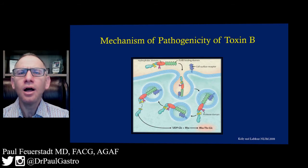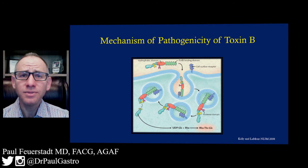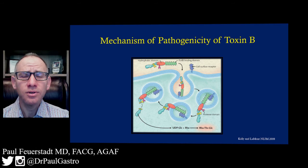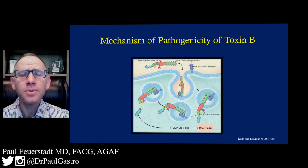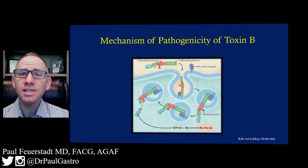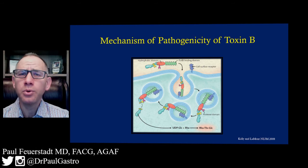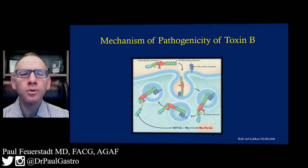Let's focus on toxin B, or TCDB. There are three regions to this protein: the receptor binding region, the hydrophobic region, and the glucosyltransferase region. When this toxin attacks the colonocyte, it binds onto the epithelial receptor, gets internalized, and forms an endosome. Within that endosome, an acidic environment develops, causing perforations around the periphery of the endosome, resulting in toxin B becoming a transmembranal protein with the hydrophobic region forming the bridge.